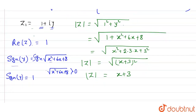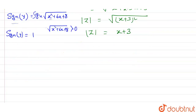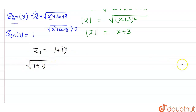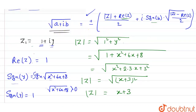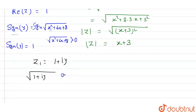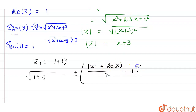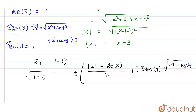I'm using the formula for the root of (1 + iota·y). The formula gives: root equals plus or minus — root over (mod Z plus real part of Z) divided by 2 — plus iota times signum of y — into root over (mod Z minus real part of Z) divided by 2.